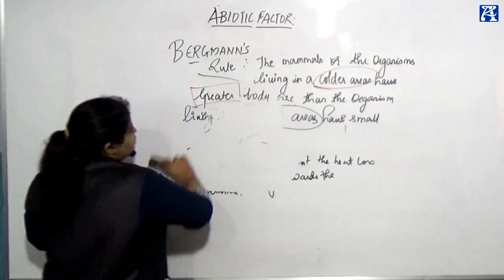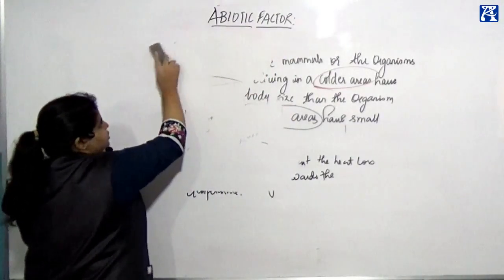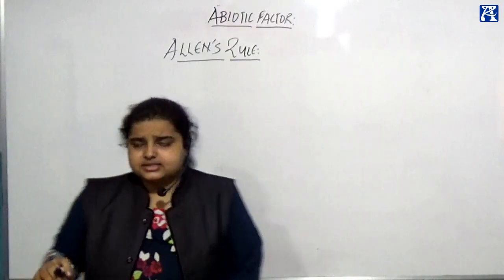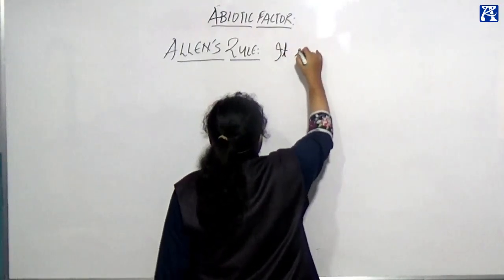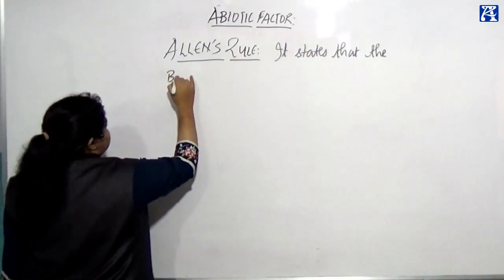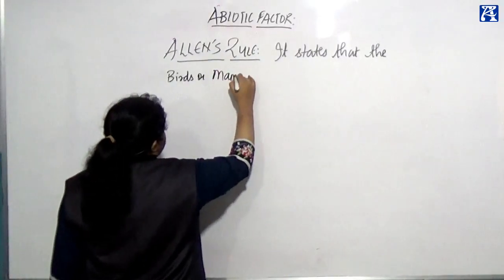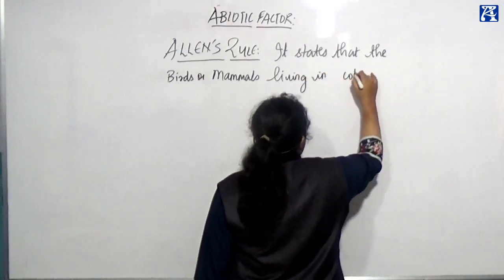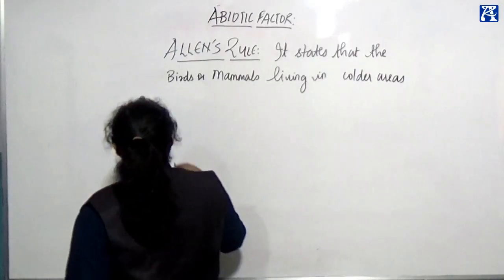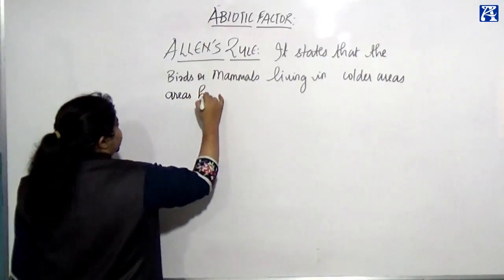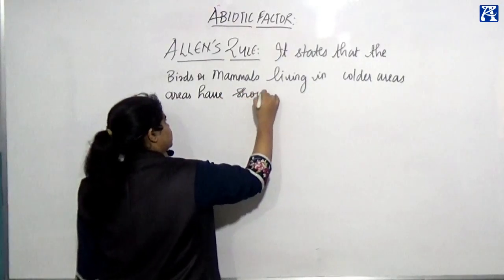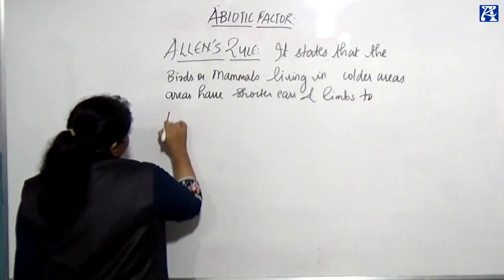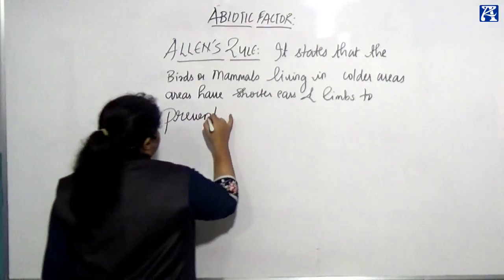Next is Allen's rule. Allen's rule states that birds or mammals living in colder areas have shorter ears and limbs to prevent heat loss from the body.